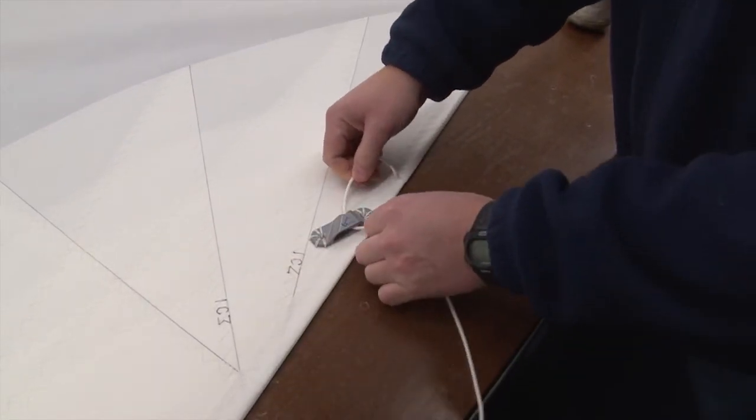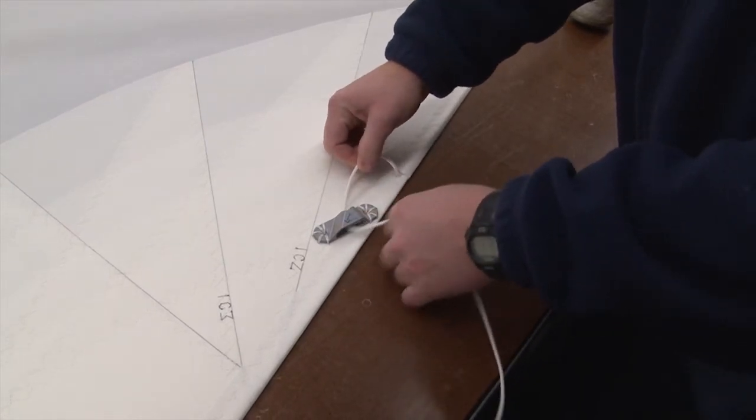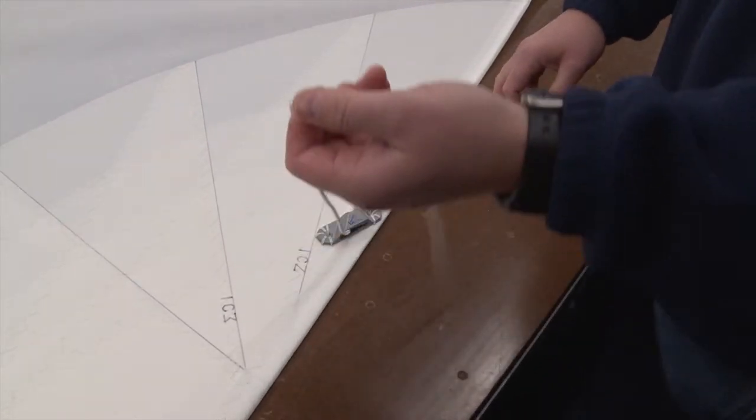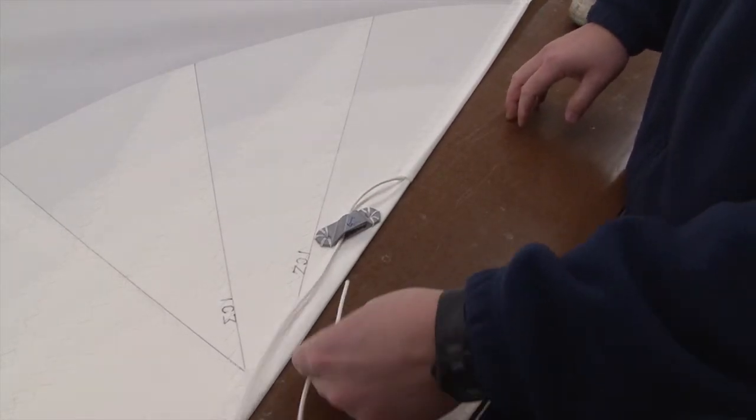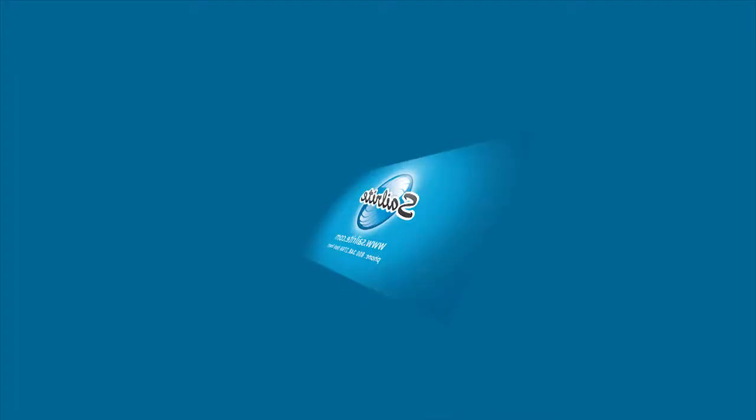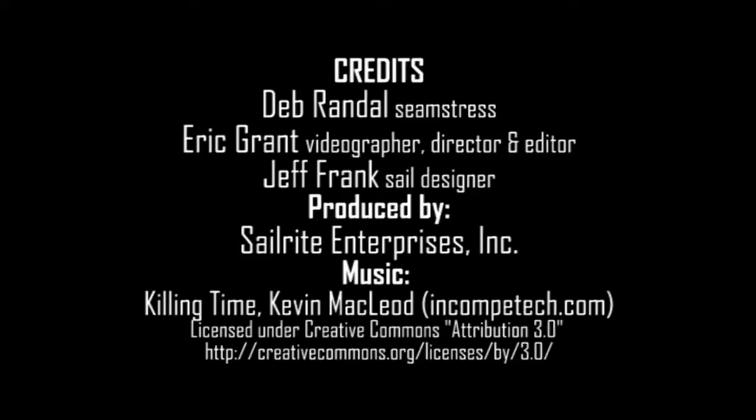And then if you wanted to uncleat it, you just pull down and let loose on the line. And certainly under load, if you cleated it when it's not under load here, this is going to just come out, but it should. There's no load in it, no reason for you to be using the leech line in that case. Many more helpful tips are available at Sailrite.com. Thanks for watching.